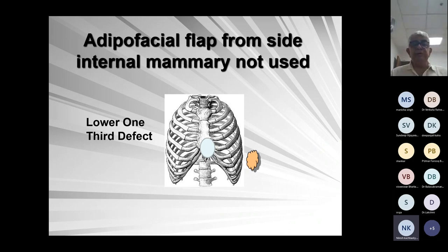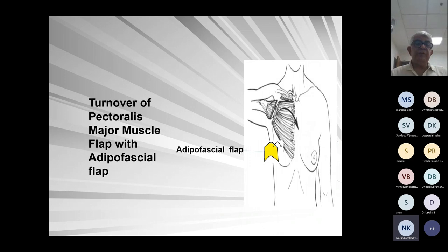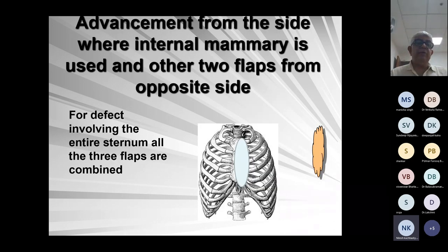The lower part is the most difficult to cover. I have developed an adipofascial flap — the fascia covering the rectus abdominis muscle can be raised and turned around based on the internal mammary artery, which has not been used, normally from the right side. For defects involving the entire sternum, you can use all three flaps: from the left side on the major pedicle; from the right side — if LIMA is used — the turnover; and from the right side based on internal mammary, you can use the adipofascial flap. So the combination is: pectoralis major advancement, pectoralis major turnover, and adipofascial flap.